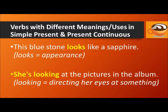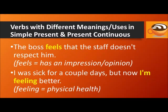Here are a few other verbs that follow this pattern. This blue stone looks like a sapphire — looks refers to appearance, an intrinsic quality of the stone. She's looking at the pictures in the album — looking is continuous because it refers to an action, directing her eyes at something. The boss feels that the staff doesn't respect him — feels is used in the present simple because it refers to having an impression or opinion.